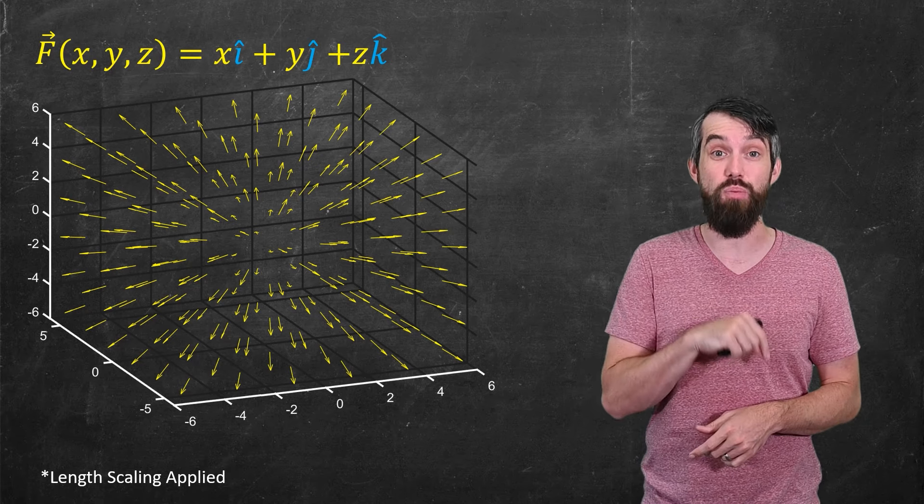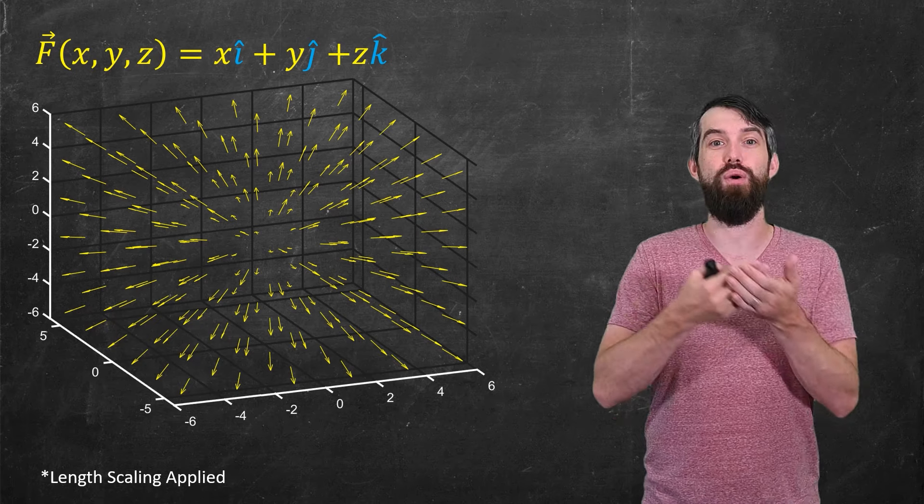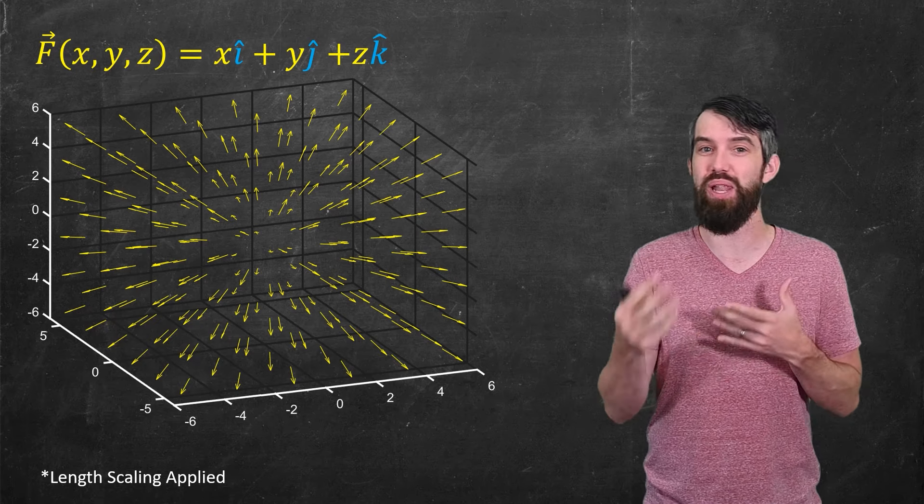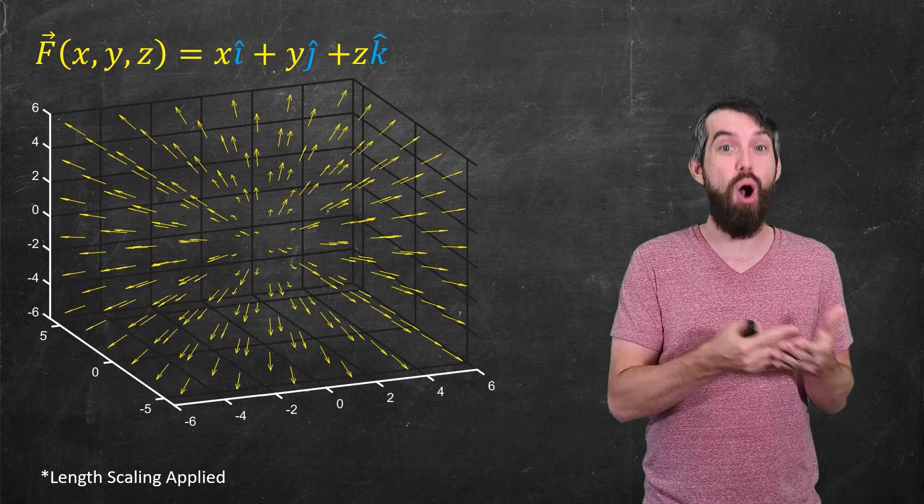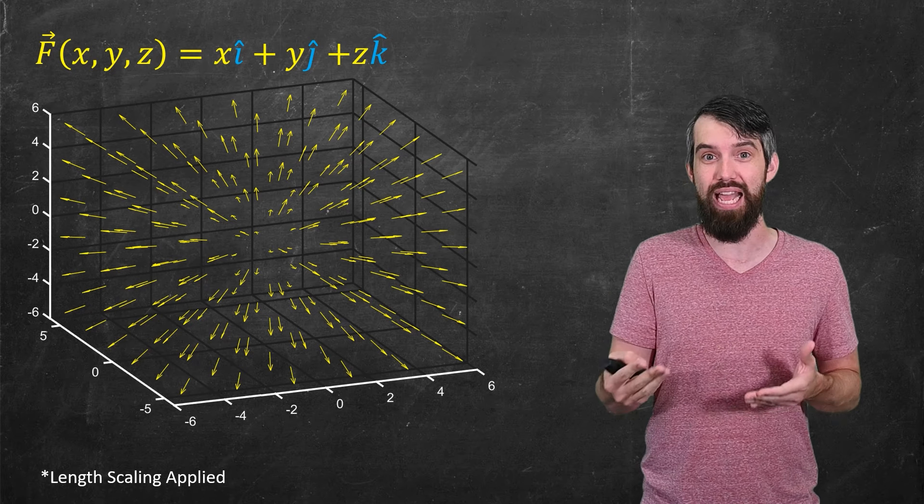And again, I'll put a link down below to a plotter for a three-dimensional vector field if you want to play around with changing the component functions away from, say, the x, y, and z that I have here.